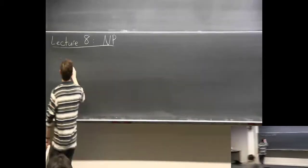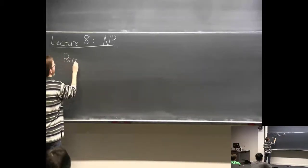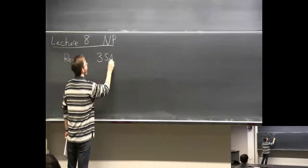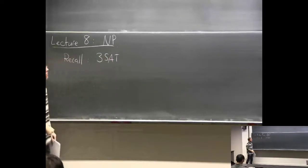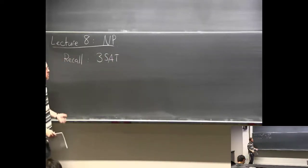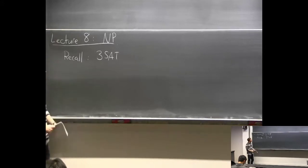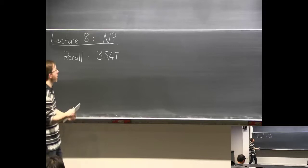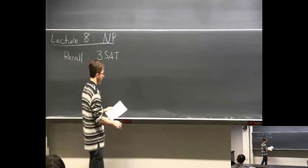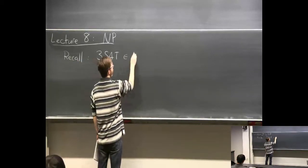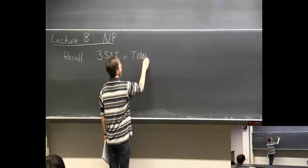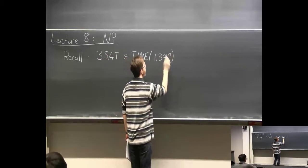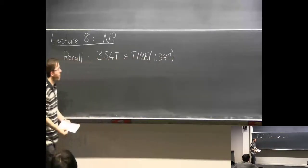Recall we talked about 3SAT — the problem of checking if a given CNF formula with at most three literals per clause is satisfiable. You can do it with a brute force solution in time about 2^n. One thing I mentioned is that you can actually do it a bit faster than that — still exponential time, but something like 1.34^n with an interesting algorithm.